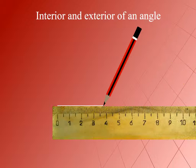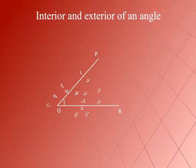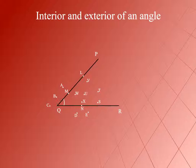Interior and Exterior of an Angle. Observe the figure shown here. An angle divides a plane into three parts. The part that exists inside the angle is called the interior of the angle. For example, points U, V, W, X, S, T together form the interior of the angle PQR.